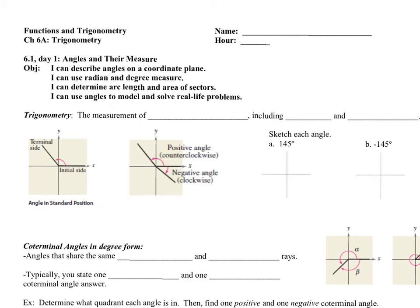Chapter 6A is titled Trigonometry. You're going to get a lot of terminology in this chapter. Our first lesson is broken down into three parts. For day one, we're going to look at angles and their measure in degree form. We'll describe angles on a coordinate plane and use degree measure today. Eventually we'll look at arc length and sectors, then model real-life problems. Make sure to put your name at the top and have a calculator ready. The definition for trigonometry is the measurement of triangles, including both sides and angles.